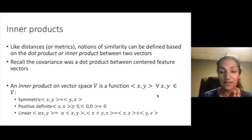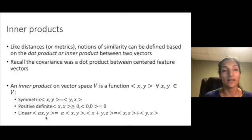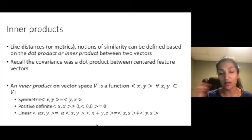Inner products are sort of a related notion and these define similarity of two vectors of high dimensional space by means of the dot product operation. Recall that the covariance was a dot product between centered feature vectors. Inner products are usually denoted with these angled brackets and they too are symmetric, they're positive definite, and they're linear. Here I've shown linearity in the first term, but by symmetry they're also linear in the second term.